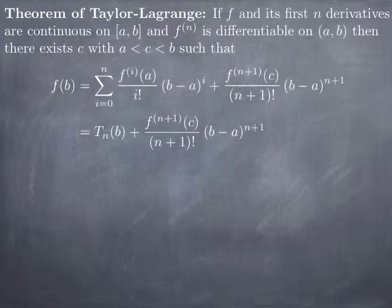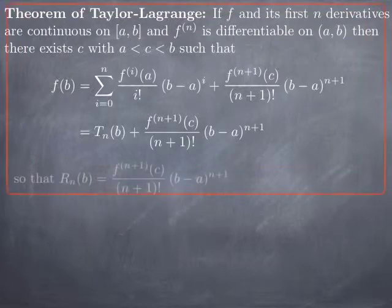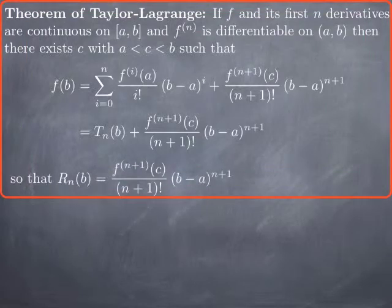The remainder at b is given by the (n+1)th derivative of f evaluated at c, divided by (n+1) factorial, multiplied by (b minus a) to the (n+1). So there is a c strictly between a and b for which the nth remainder at b is given by this (n+1)th derivative of f evaluated at c, divided by (n+1) factorial, multiplied by (b minus a) to the (n+1).